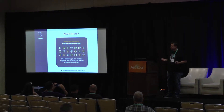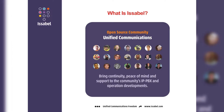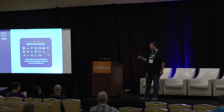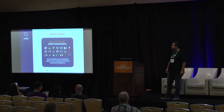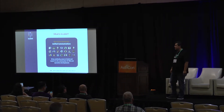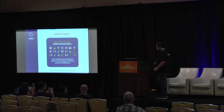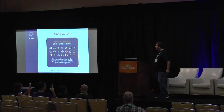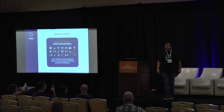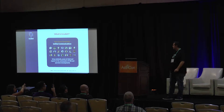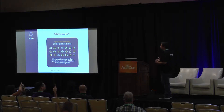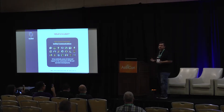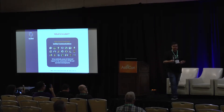Isabel is an open source unified communications community that came up with a solution after Elastix's very popular unified communication solution disappeared two years ago. Members of the community joined their efforts together and came up with a plan. They organized and basically came up with a solution to provide a future for those installations. From one day to the other, the Elastix project disappeared.